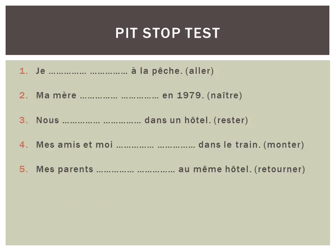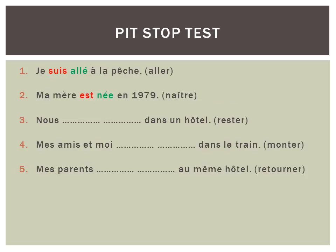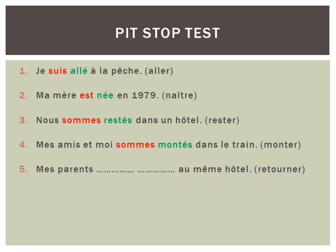See if you can do these — pit stop test. Can you put the verb, which is given in the infinitive, correctly into the past tense, remembering to use être as the auxiliary? Pause the presentation, have a go, then restart for the answers. Number one: je suis allé à la pêche — I went fishing. Number two: ma mère est née en 1979. Number three: nous sommes restés dans un hôtel — We stayed in a hotel. Number four: mes amis et moi sommes montés dans le train — My friends and I got onto the train. Number five: mes parents sont retournés au même hôtel — My parents returned to the same hotel.